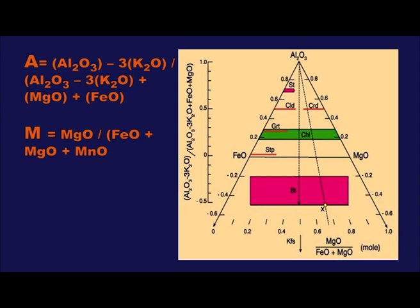The geometrical projection of the point inside the tetrahedron onto the AFM plane is carried out in actual practice by means of calculation. First of all, the weight percent of oxides are converted to molecular proportions. A and M, which serve as coordinates, are calculated as follows: A equals (Al2O3 minus 3K2O) divided by (Al2O3 minus 3K2O plus MgO plus FeO). M equals MgO divided by (MgO plus FeO plus MnO).